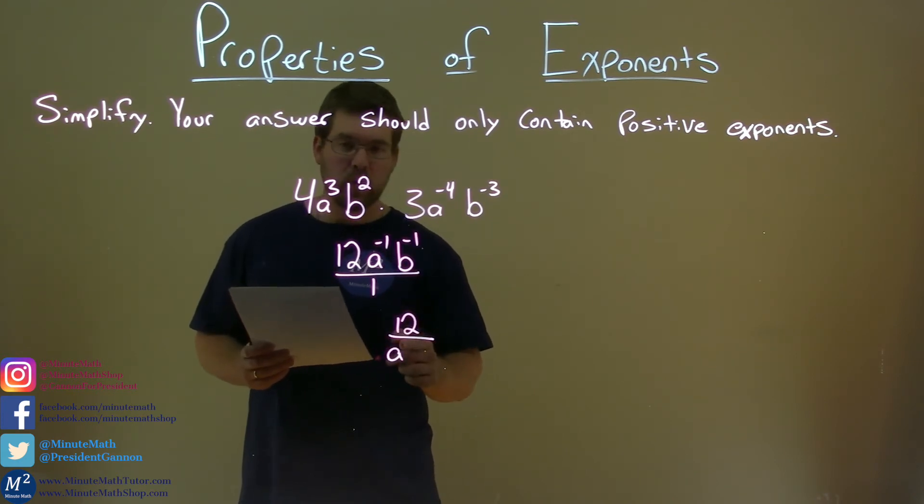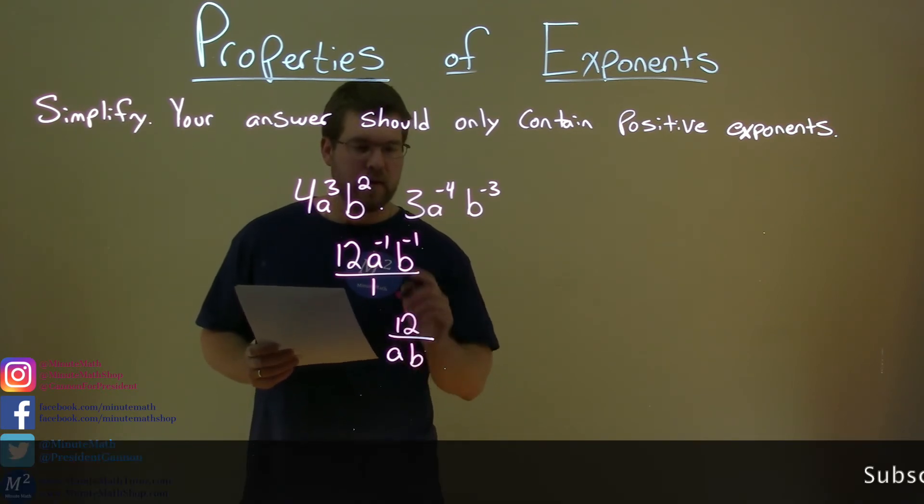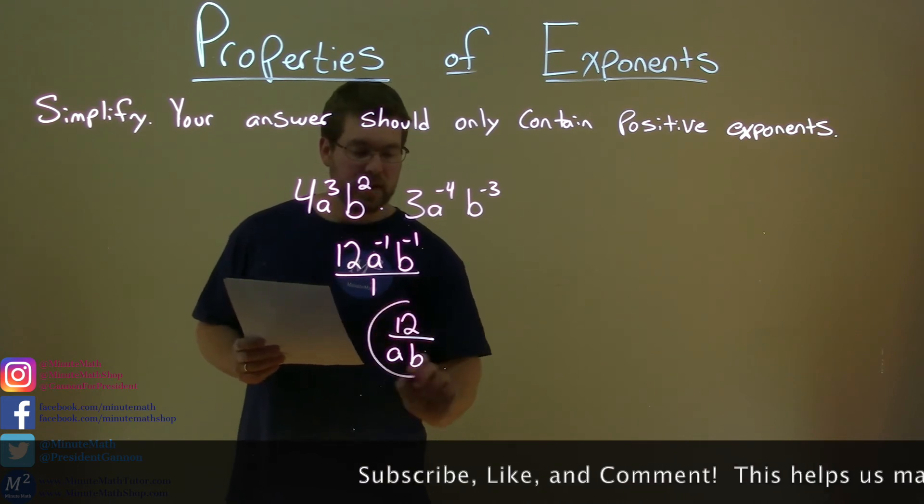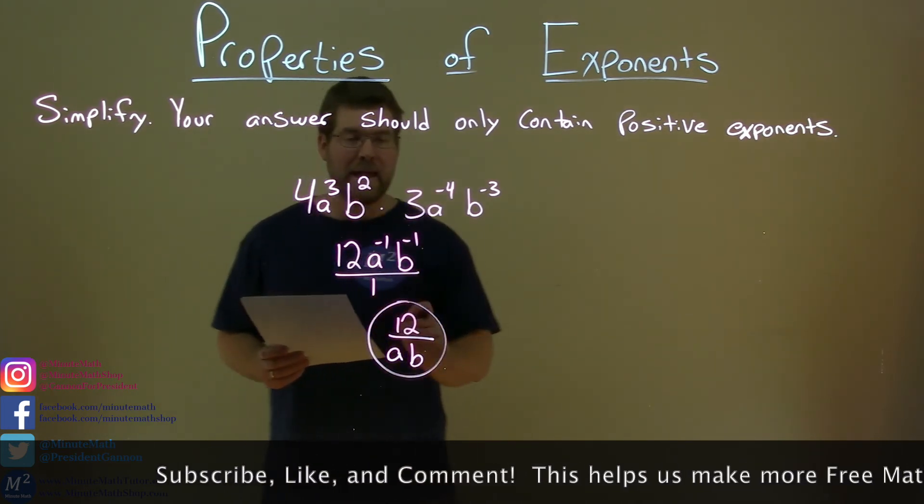We have a to the positive 1 power, which we don't have to write. And then b comes down again to the positive 1 power, but we don't have to write it. So our final answer is just 12 over ab.